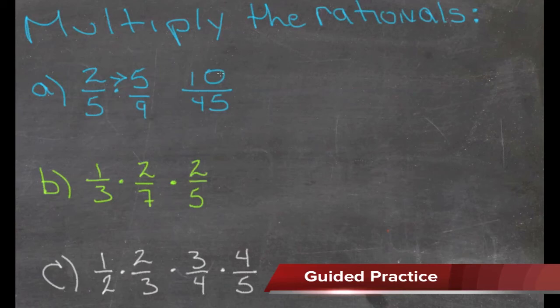Then we could reduce. Top and bottom both divide by 5, so we get 2 over 9.